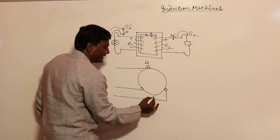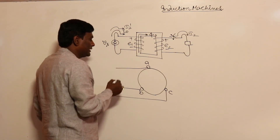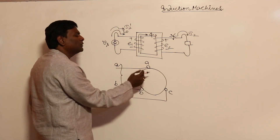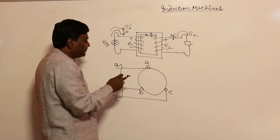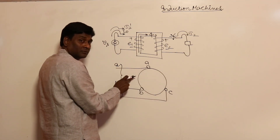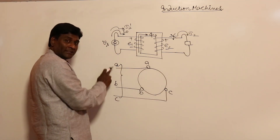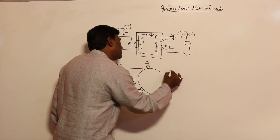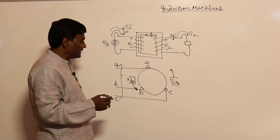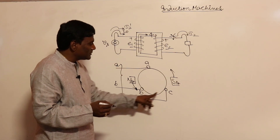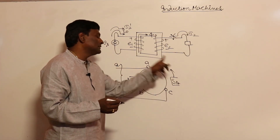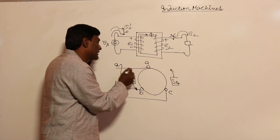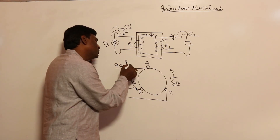In an induction machine, consider stator windings a-a', b-b', c-c'. If we supply three-phase voltage a-b-c here, the space-displaced windings connected to time-displaced voltages will automatically form a rotating magnetic field. This RMF rotates at synchronous speed in the direction of phase sequence A-B-C. Even with no rotor present, flux is being set up in the air gap by the stator no-load current.